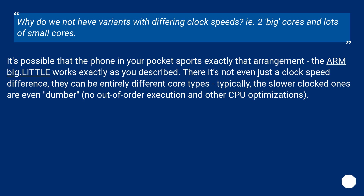Why do we not have variants with differing clock speeds — for example, two big cores and lots of small cores? It's possible that the phone in your pocket sports exactly that arrangement. ARM big.LITTLE works exactly as described. It's not even just the clock speed difference — they can be entirely different core types. Typically the slower-clocked ones are even simpler: no out-of-order execution and other CPU optimizations.